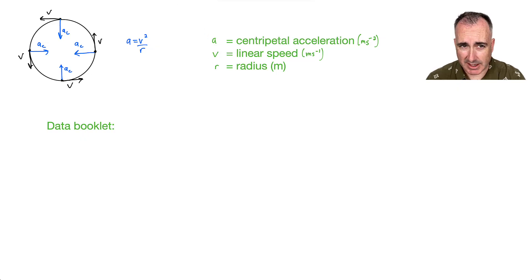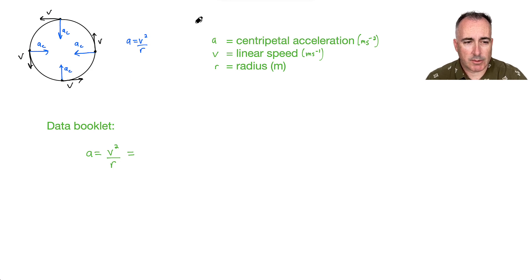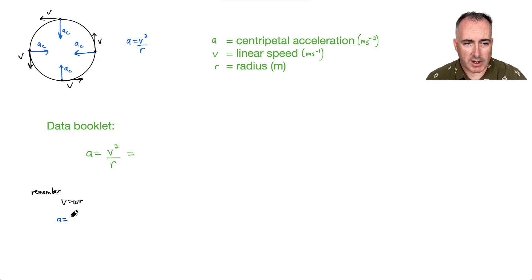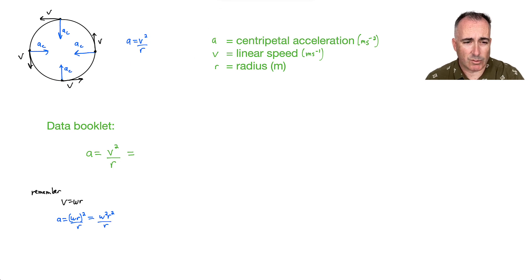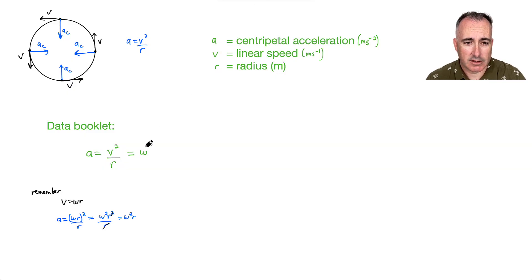The data booklet gives A equals V squared over R. We can also derive another form. Remember from another video that V equals omega R. So substituting: A equals (omega R) squared over R, which gives omega squared R squared over R. The R's cancel, and we end up with A equals omega squared times R. That's the second version of this equation.